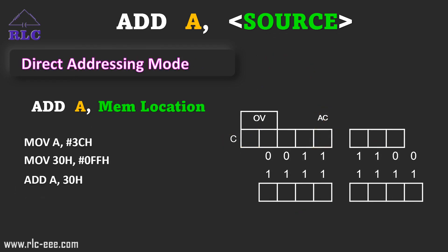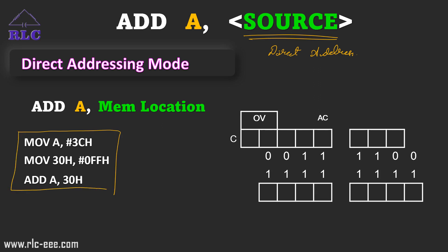Next, we'll move on with the direct addressing mode example. In direct addressing mode, the source is a direct address. In this snippet: MOV A, #3Ch stores 3Ch in the accumulator. Then I am using 30h as a memory location — in memory location 30h, I am storing FFh. Finally, ADD A, 30h adds the content of the accumulator with the content of memory location 30h.